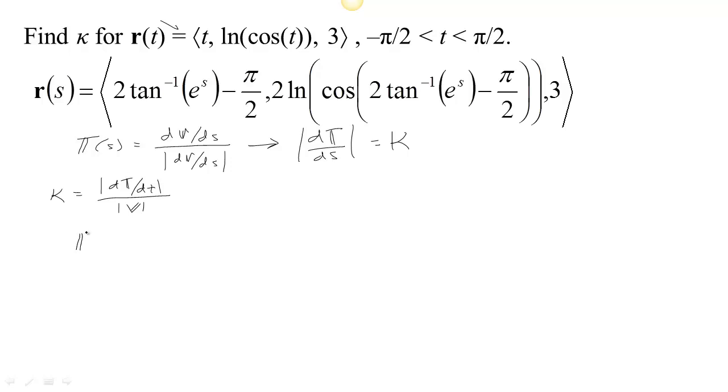So we start off to find T, we need to find the velocity and divide by the speed. So that would be the norm of the velocity, that's the speed, right?